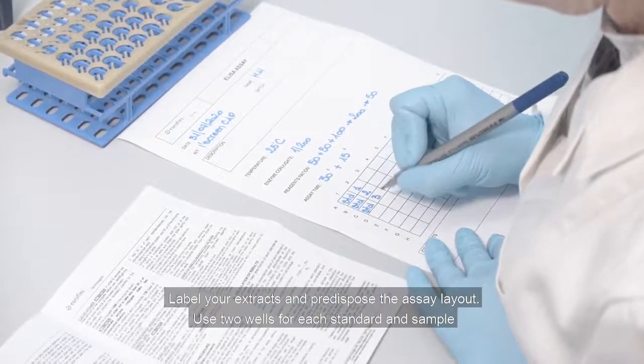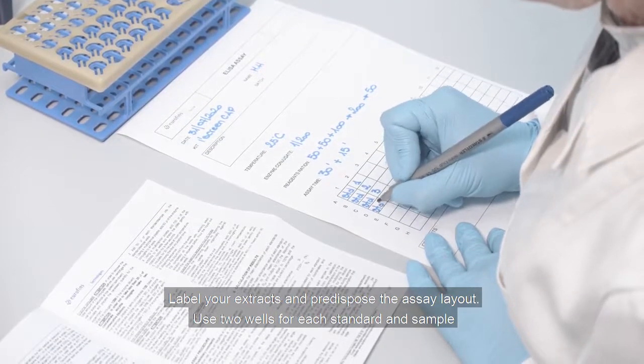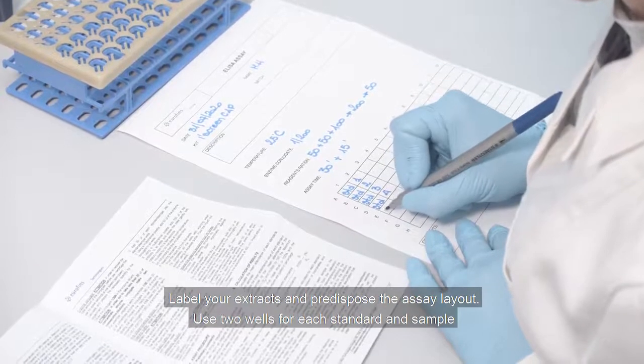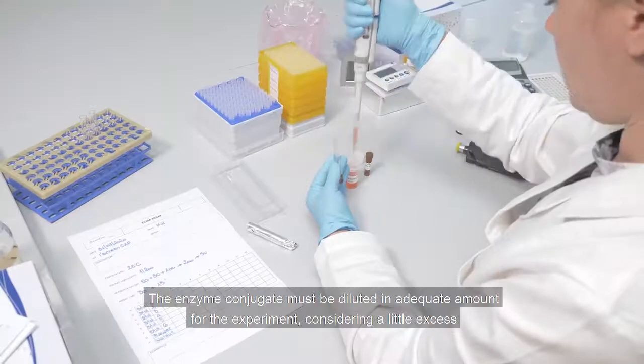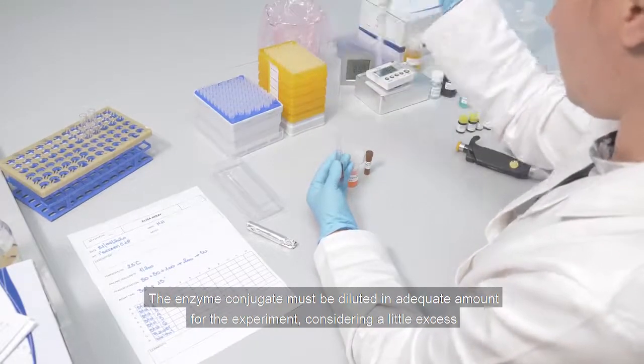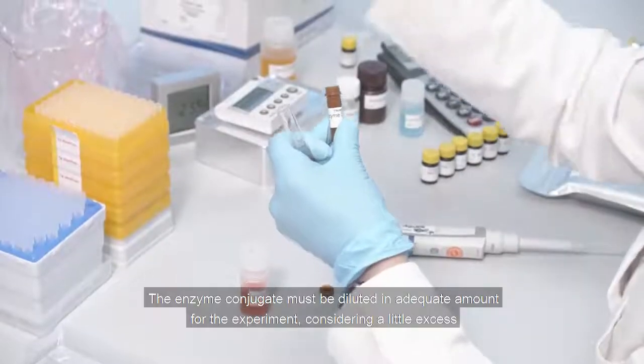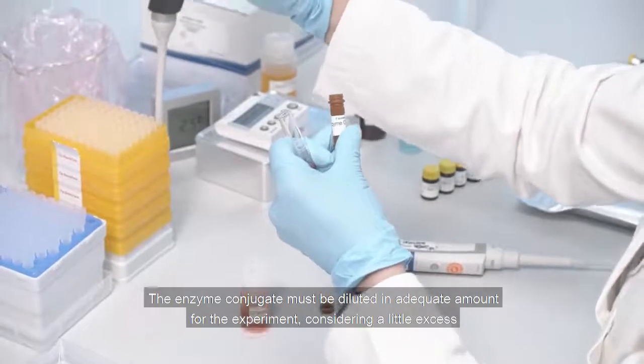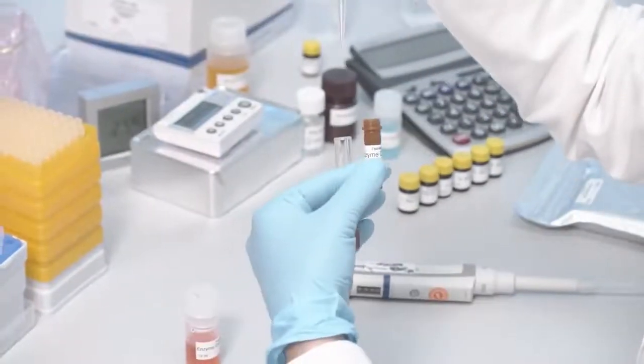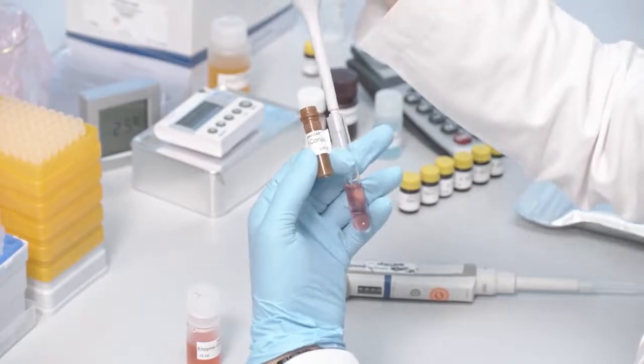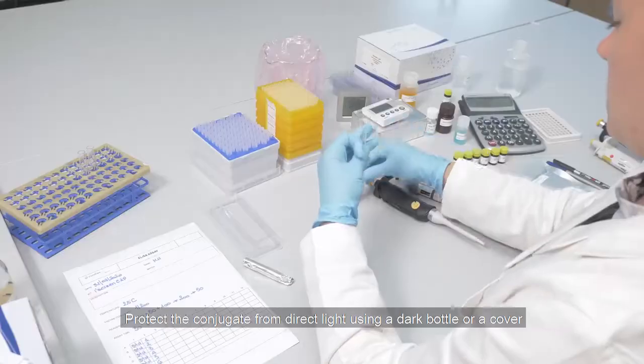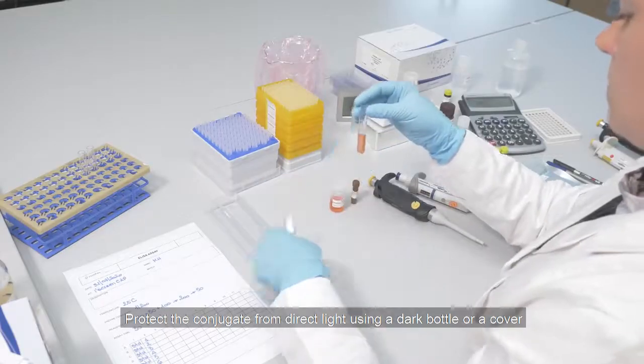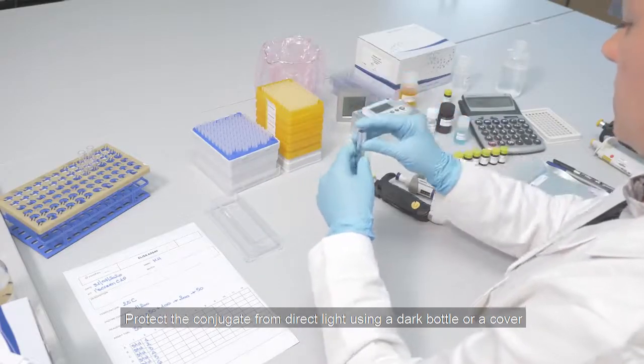Label your extracts and prepare the assay layout. Use two wells for each standard and sample. The enzyme conjugate must be diluted in adequate amount for the experiment, considering a little excess. Protect the conjugate from direct light using a dark bottle or a cover.